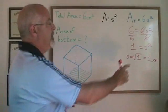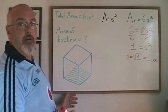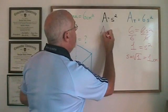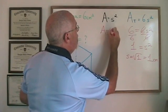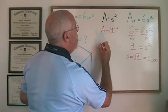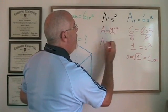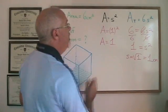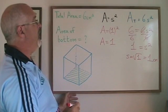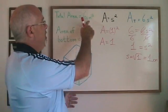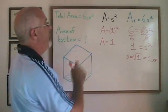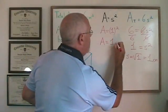Now we can plug the side length of 1 into the area of a square formula to answer our question. Area is equal to 1 squared and 1 squared is 1. Our answer is 1 and the unit of measure, because we were dealing with centimeters and centimeters squared and this is an area, the unit of measure will be centimeters squared.